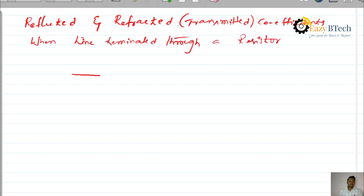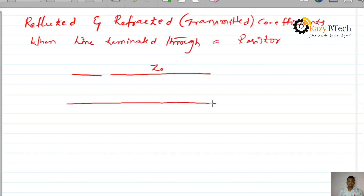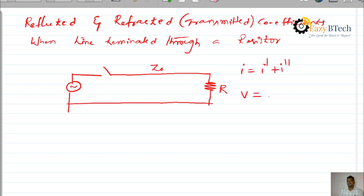Consider a transmission line with impedance Z naught. This line is connected to a resistor, and a surge will be initiated here. We know that the transmitted current equals the incident current I dash plus the reflected current I double dash. The transmitted voltage equals the incident voltage plus the reflected voltage. Keep in mind these two equations.